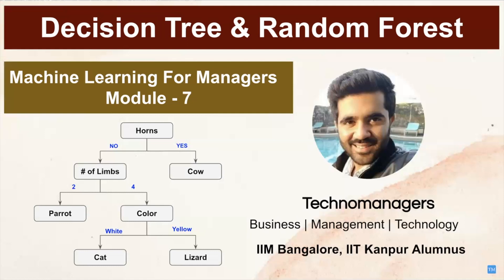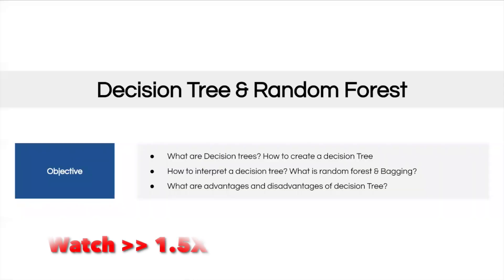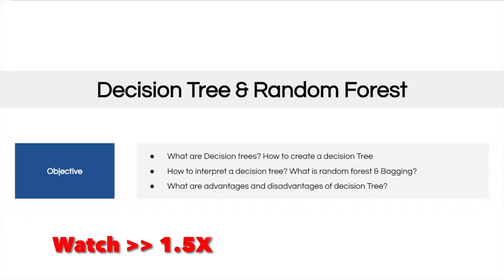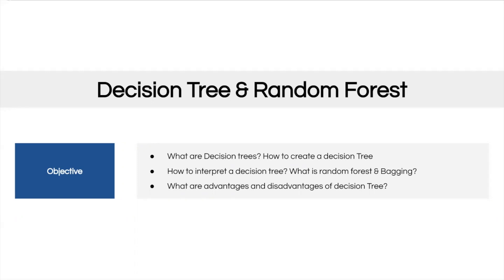Moving on to module 7 — here's what we will learn. We'll cover decision trees: what they are, how to create them, and how to interpret them. Then we'll look at problems like overfitting and how to solve them via ensemble models, touching on random forest and bagging. Finally, we'll see the advantages and disadvantages of decision trees.